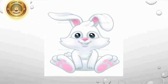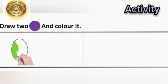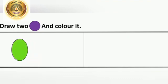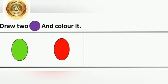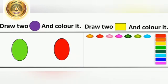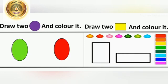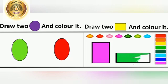Now, let's do some activity. Draw two circles and color them. Now, let's learn how to write number two. Round the bend and straight to you — that's the way you make a two.